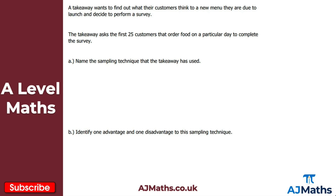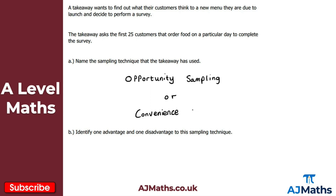For part A, we just need to name this sampling technique. There are two names we can use here. The most common is opportunity sampling, but the other name you might know it by is convenience sampling. You don't need to give both — they are the same thing — so whichever you know it by is fine.